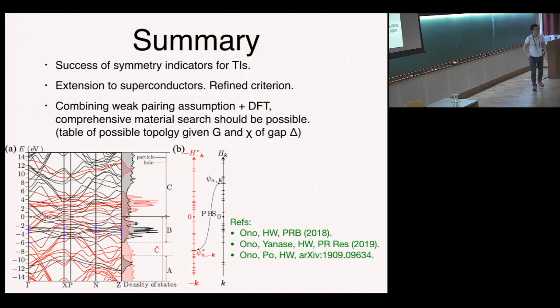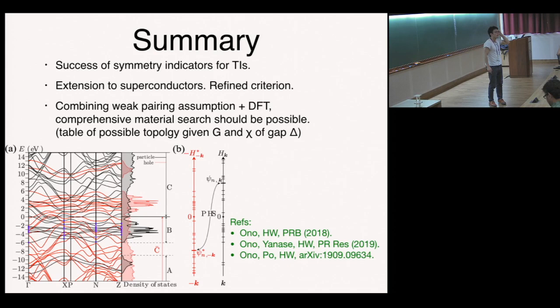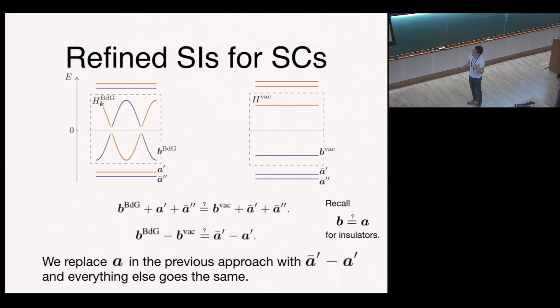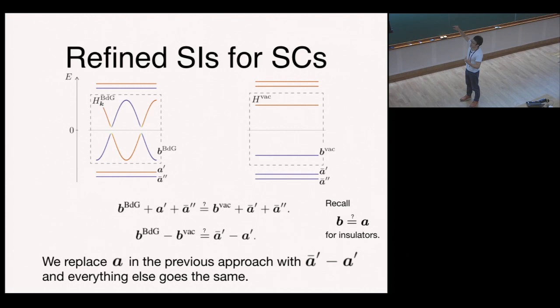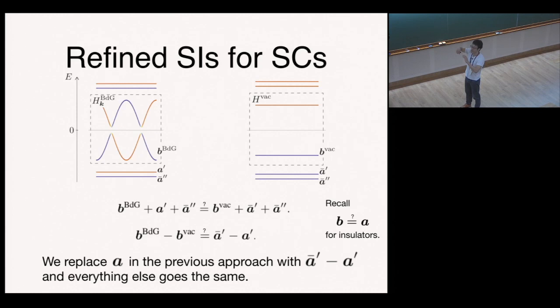Question: In your refined characterization of trivial superconductors using atomic bands, isn't that very similar to fragile topology? Answer: Yes, similar idea. What is non-trivial here is that because of particle-hole symmetry, the spectrum below E=0 and above E=0 are related, and looking at the spectrum below E=0 contains very important information about the entire BdG spectrum. This method effectively sees both the E<0 and E>0 sectors simultaneously.